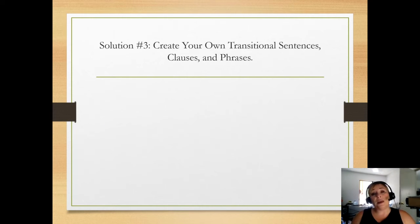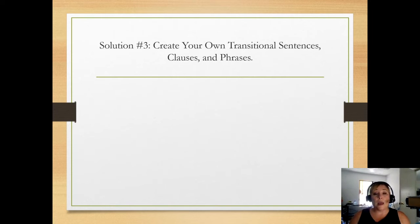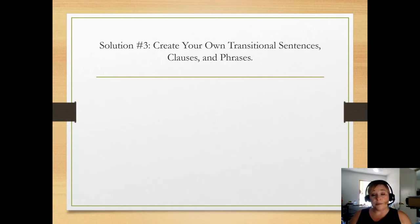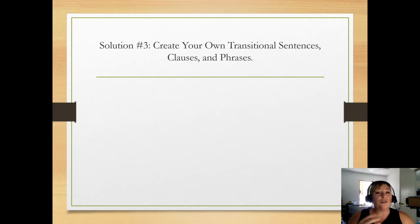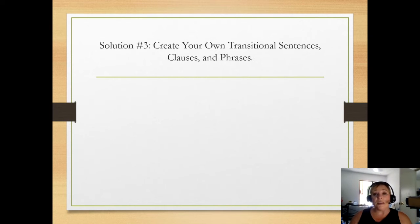Solution number three: create your own transitional sentences, clauses, and phrases. This is much more difficult to teach, especially for ESL students. But I find the very best way to learn this is to read, read, read. Listen to programs like National Public Radio, even CNN, news programs, and podcasts that are not too casual or colloquial — things that are a little more formal and academic. You will start to hear those transitional sentences, clauses, and phrases, and be able to incorporate them into your own writing.